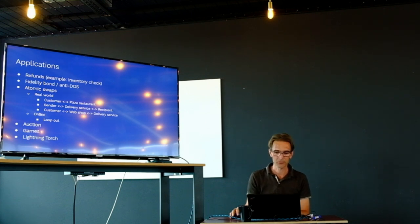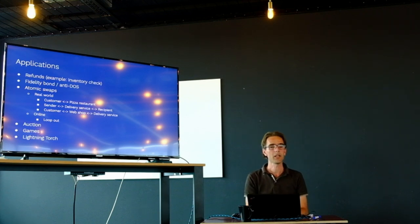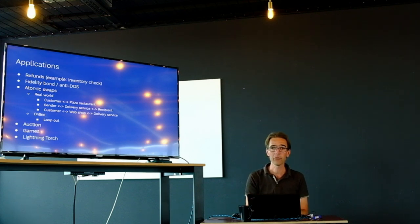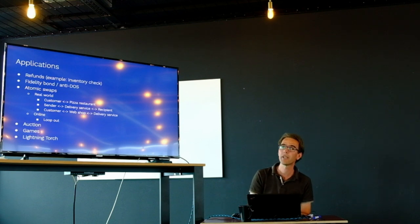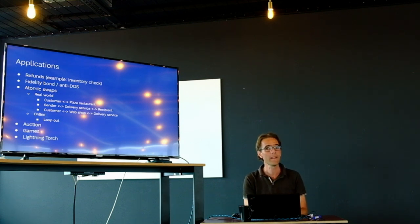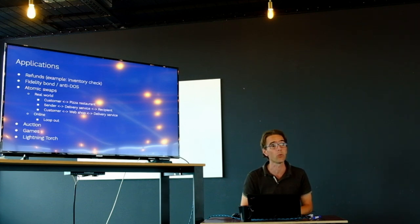Another example demonstrated at Lightning Hack Day in Munich is an auction. The auctioneer creates HODL invoices and people pay those invoices to place bids, proving they have the funds. When a higher bidder comes in, the lower bid is cancelled. There would be a QR code on screen; people scan and send their payment, and seeing a blocking screen means you're currently the highest bidder. Then someone overbids you and you see your payment failed with an unknown payment hash error, signaling you need to bid more.